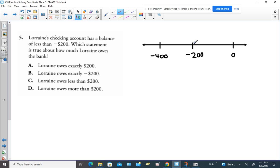So if negative $200 is here and it's less than, that means it has to be to the left. So how about we pick negative $400 as a hypothetical amount that she has.